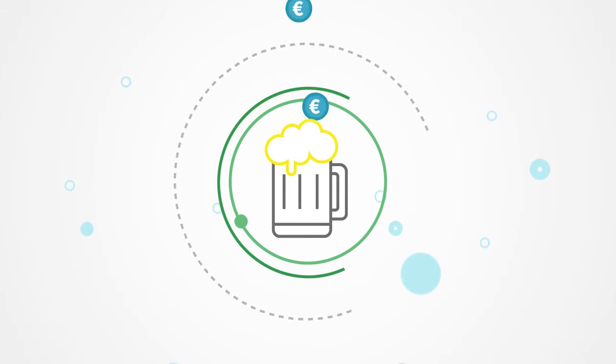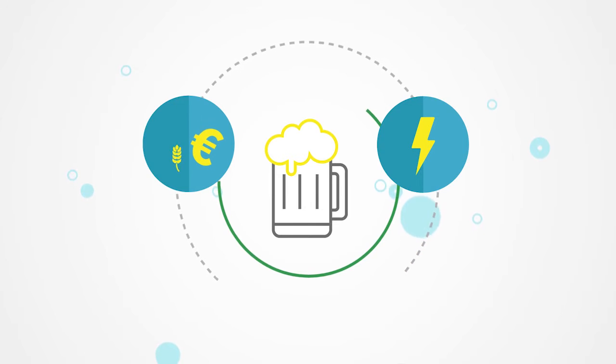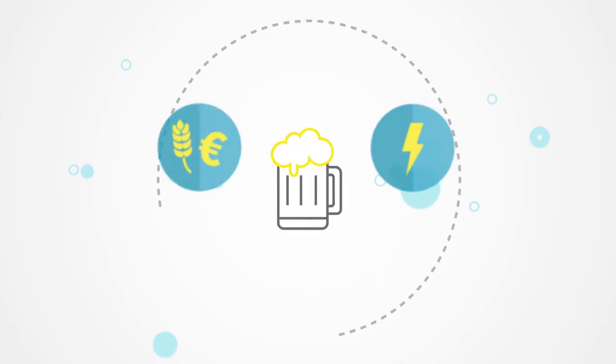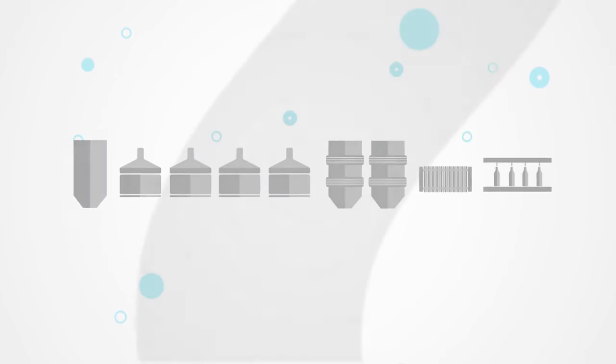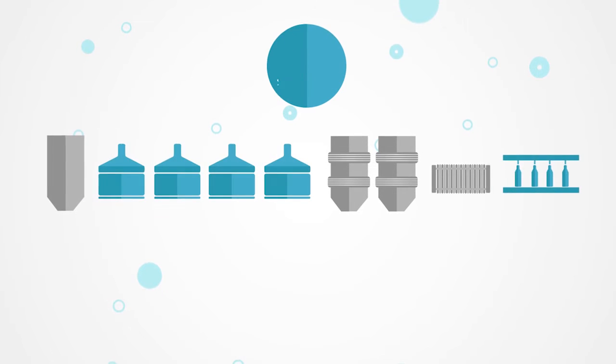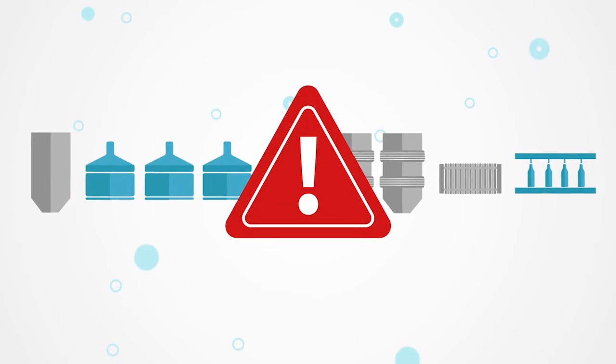Brewing beer is expensive, especially in times of increasing costs for both energy and raw materials. Each area at your brewery is in itself most probably up to current standards. But is that enough? Can you make your brewery more efficient without imposing any restrictions on the brewing process itself?